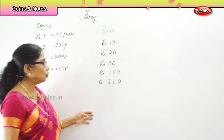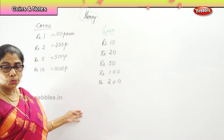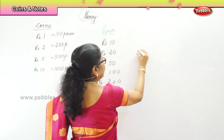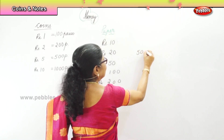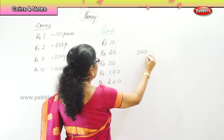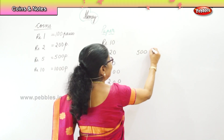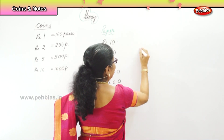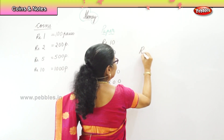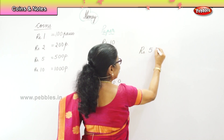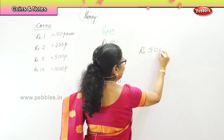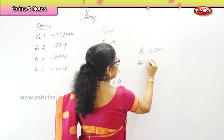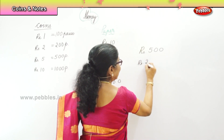Then we have two large notes. That is five hundred rupees — that's a big note. And then finally you have rupees two thousand.